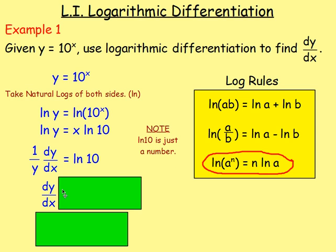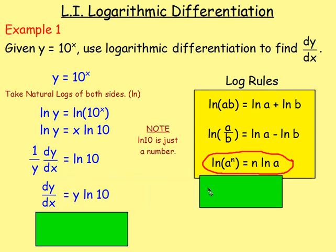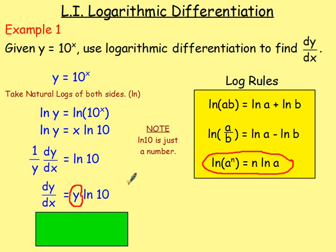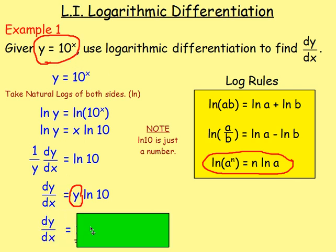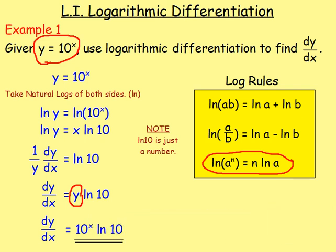To find dy/dx on its own, multiply both sides by y: dy/dx = y·ln(10). We want the answer in terms of x only, so we replace y with what it equals from the question — y = 10^x. Therefore dy/dx = 10^x · ln(10). That is your first answer.